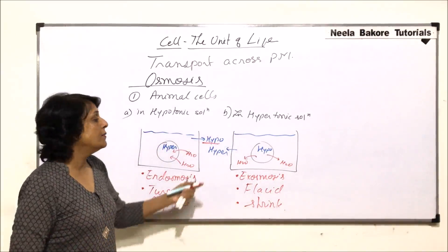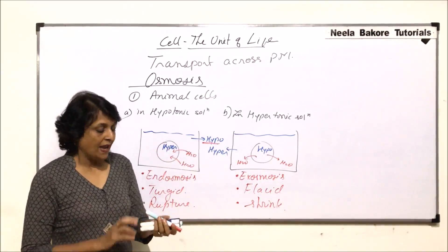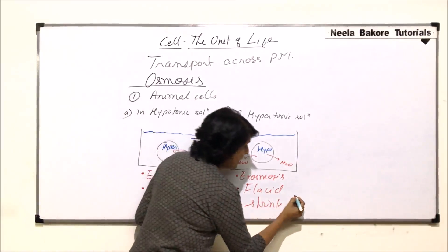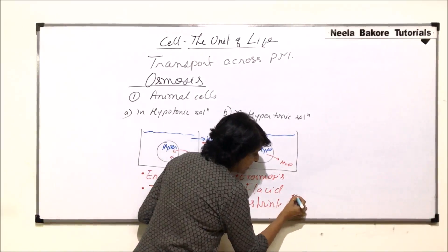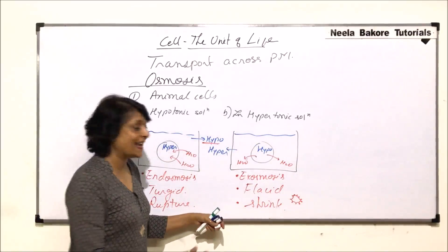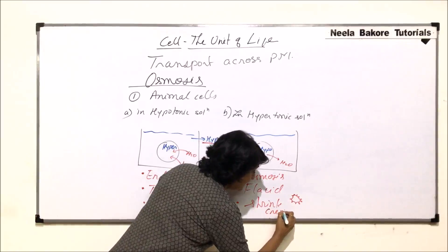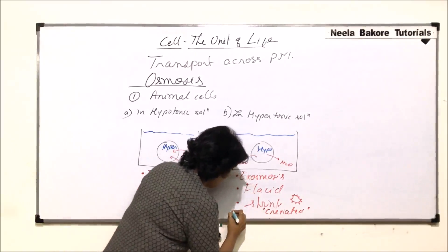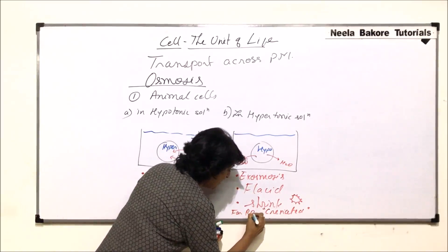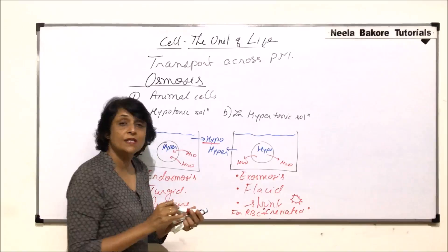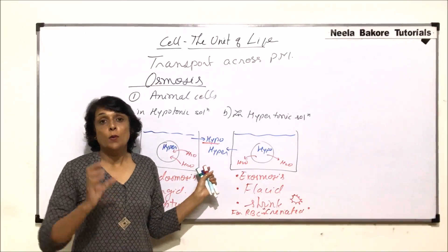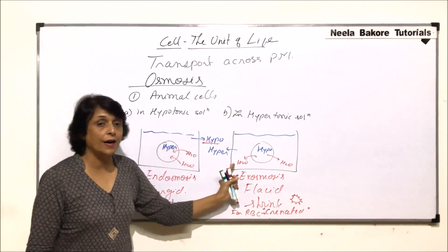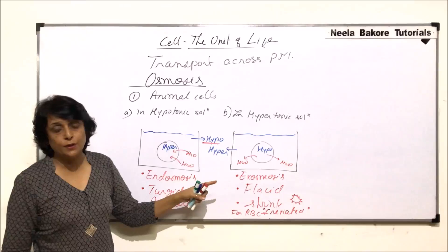This experiment was done with RBCs. After the flaccid nature and shrinking, the RBC became a shrunken shape and such an RBC is called crenated. The term crenated is normally used for RBCs because this is how this experiment was done. So the situation for an animal cell placed in either hypo or hypertonic solution results in either water going into the cell or coming out of the cell.